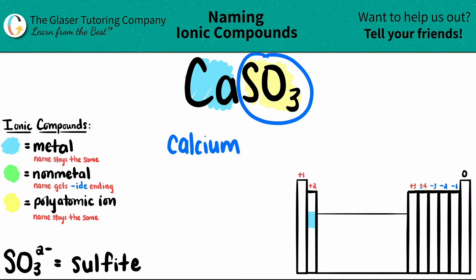And SO3, which is the polyatomic, that name stays exactly the same. So this would just be sulfite.